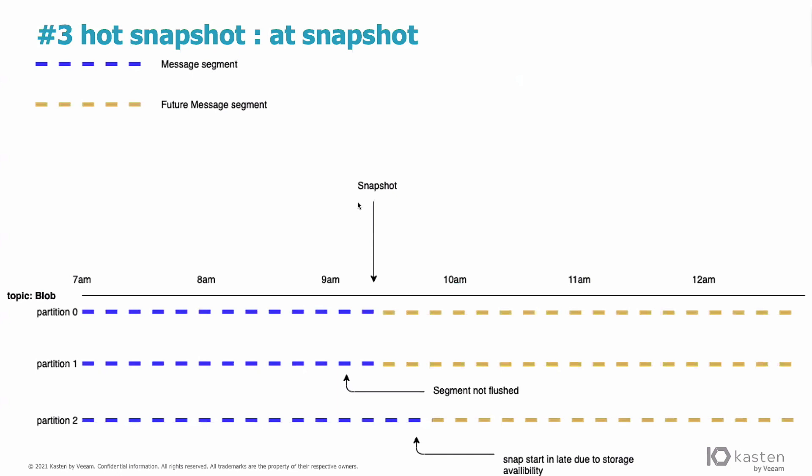The first thing is, I probably have one partition which is snapshot at the right time. But then I can have a partition where the segment is not flushed. And I may have another partition, but the snap is starting late due to the fact that when you start a snapshot, you are not 100% sure that everything is starting at the same time. It's where you may have discrepancy when you are taking this snapshot. And that's what we were speaking about a few minutes ago about application consistency. When I do a hot snapshot, I'm facing a discrepancy. I'm facing an application inconsistency, obviously.